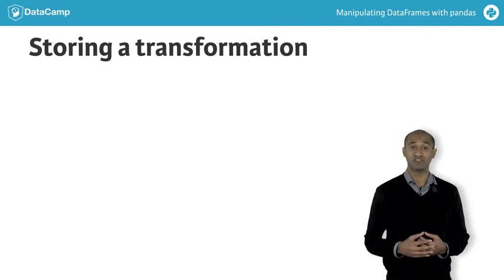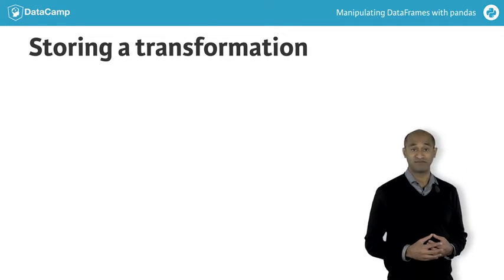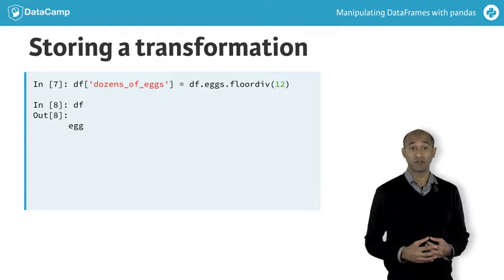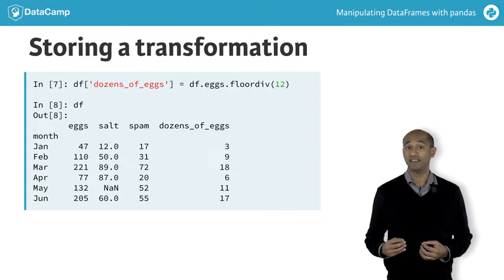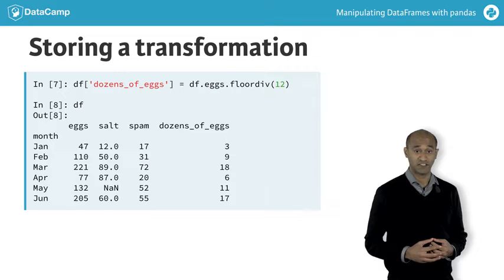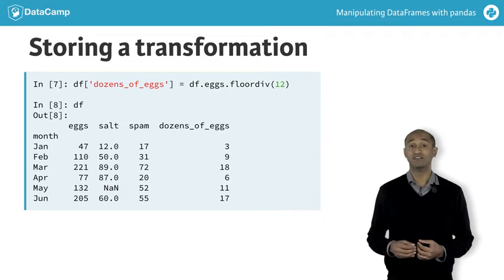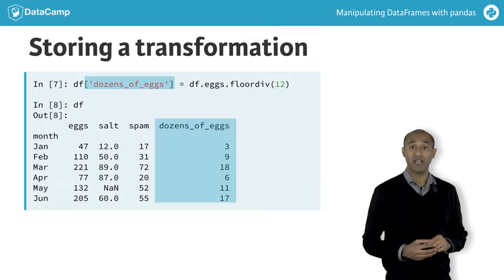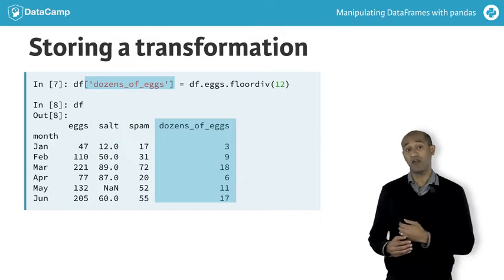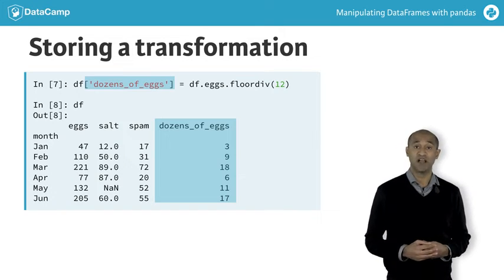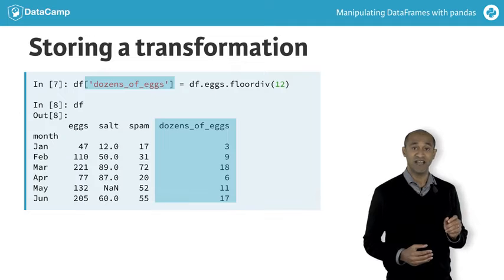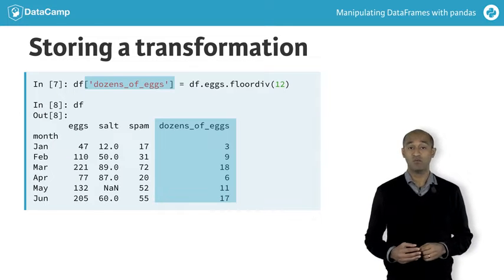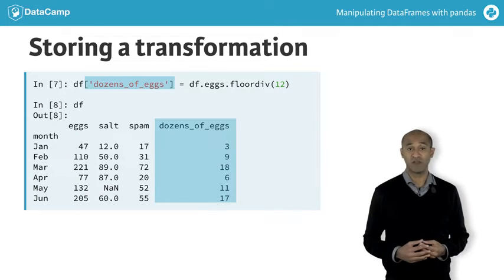All of the preceding computations returned a new data frame without altering the original data frame, df. To preserve a computed result, we can create a new column storing calculations. For instance, here we create a new dozens-of-eggs column in which the floorDiv(12) method is applied to the series df.eggs. Both apply and vectorized methods work on series as well as on entire data frames.